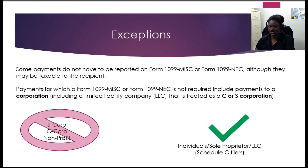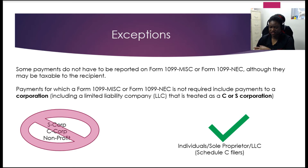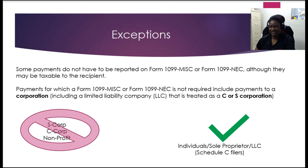Moving on, there are exceptions to what types of entities you would file these 1099s for. For corporations, you would not issue them a form 1099 — that includes S corporations, C corporations, nonprofits, and any incorporated businesses. For your Schedule C filers, like individuals, sole proprietorships, and DBAs, you will need to issue them a form 1099.